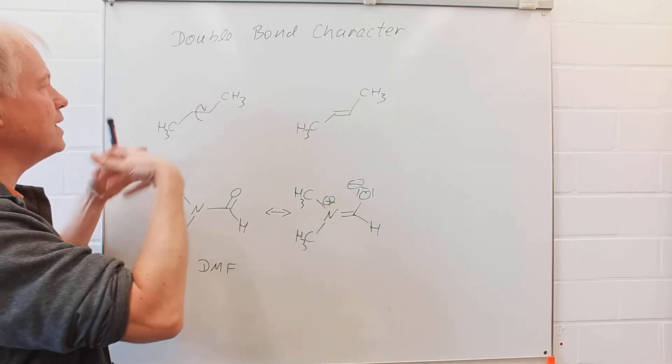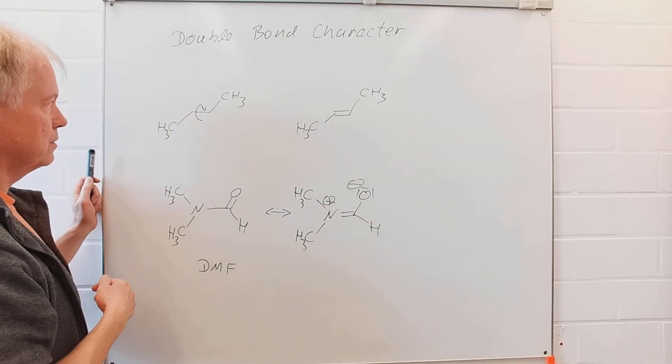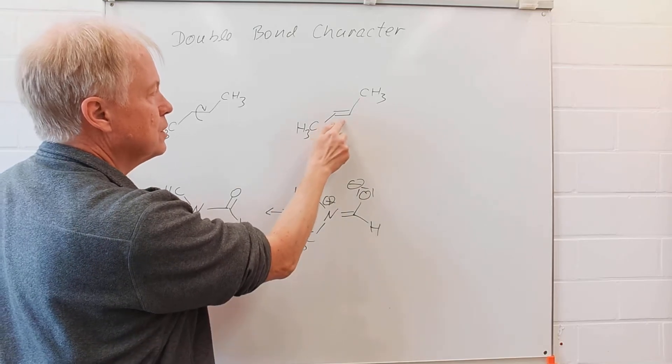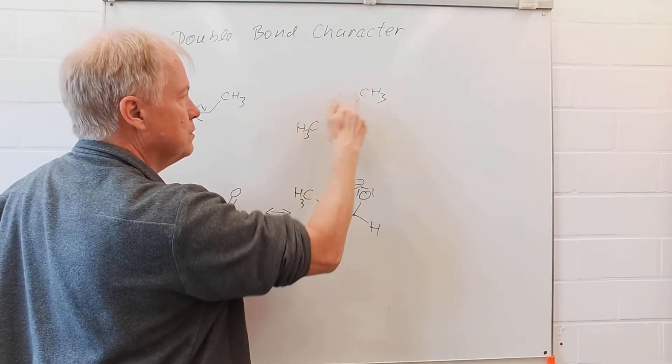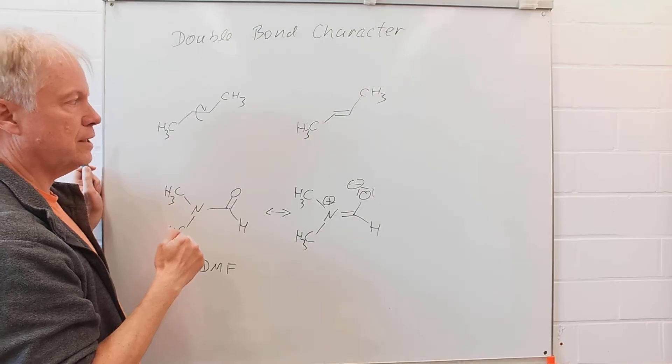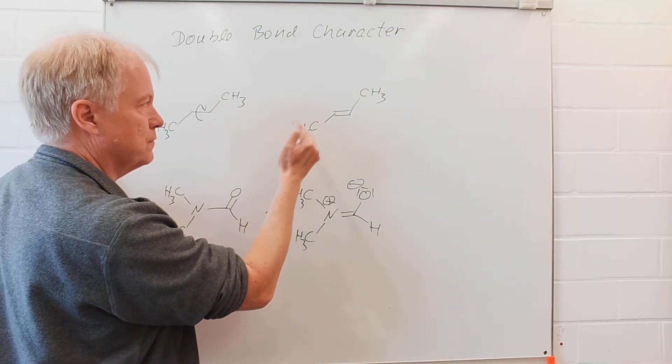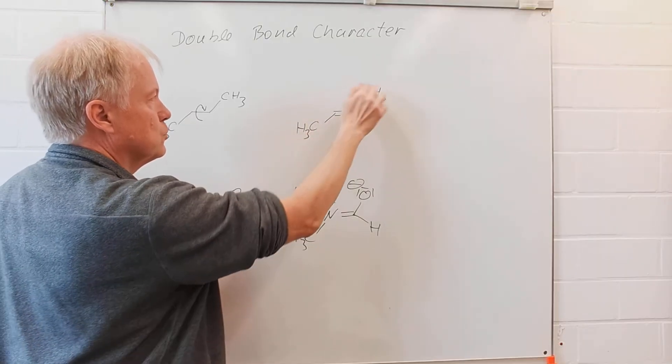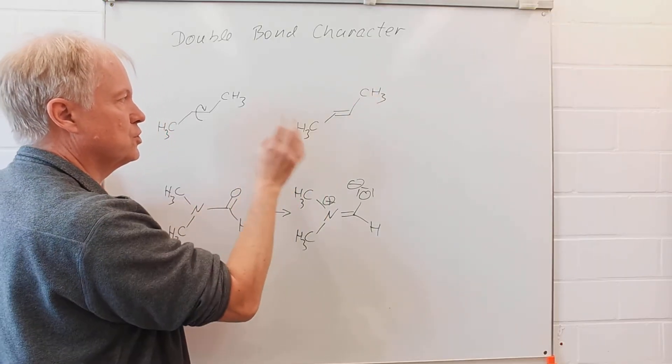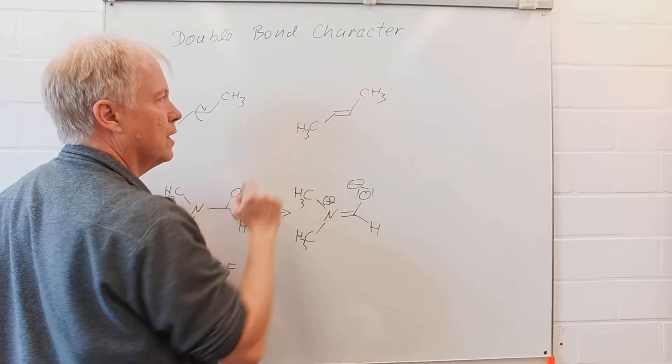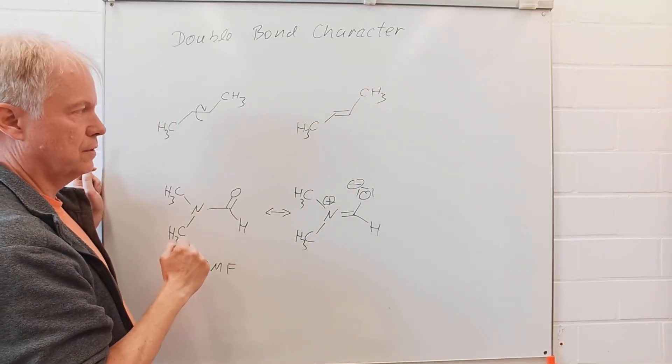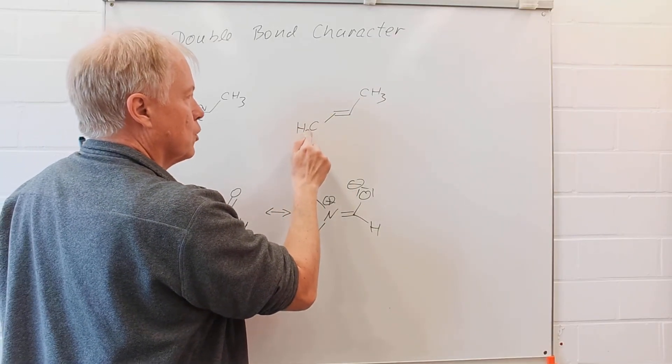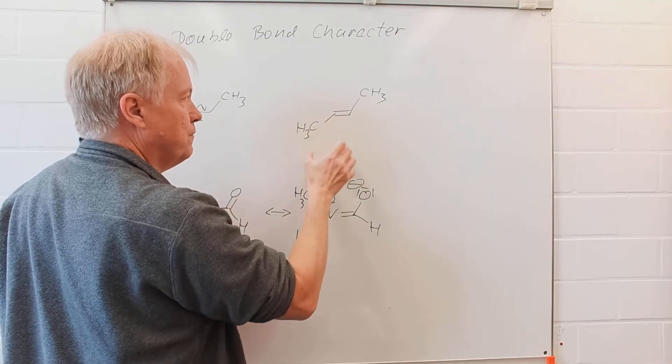As soon as we have a double bond, the stereochemistry is stabilized. Here we have trans-2-butene, and those two methyl groups stay relatively far apart from each other.